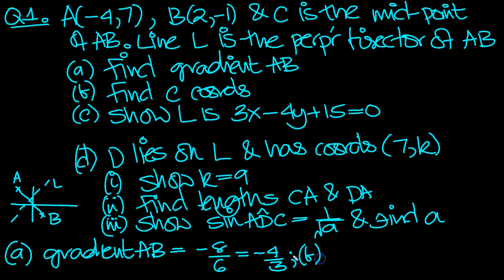Now part B. Find the C coordinates. Now C is the midpoint of AB. So C has coordinates, add them: -4 plus 2 is -2.